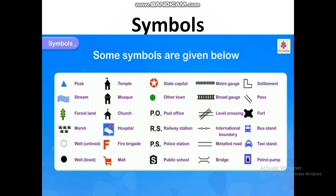Next, symbol. A symbol on a map represents real objects. It may be in the form of a simple drawing, a letter, or any shape. The same symbols are used all over the world and are called map symbols, which allow anyone to read a map.